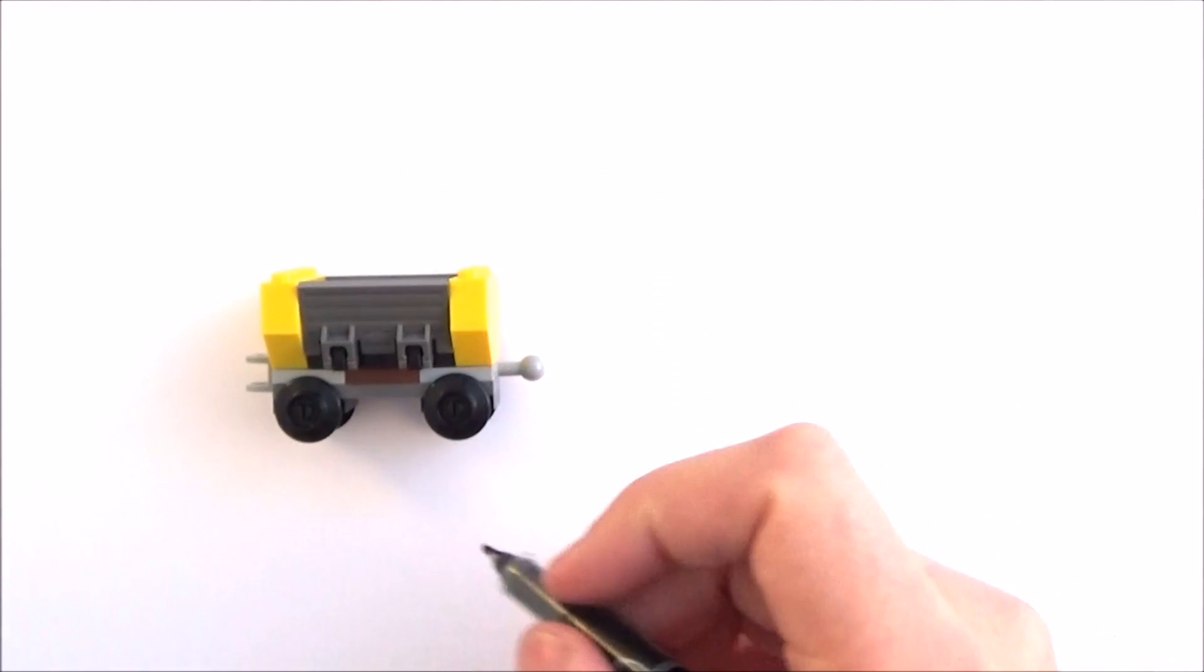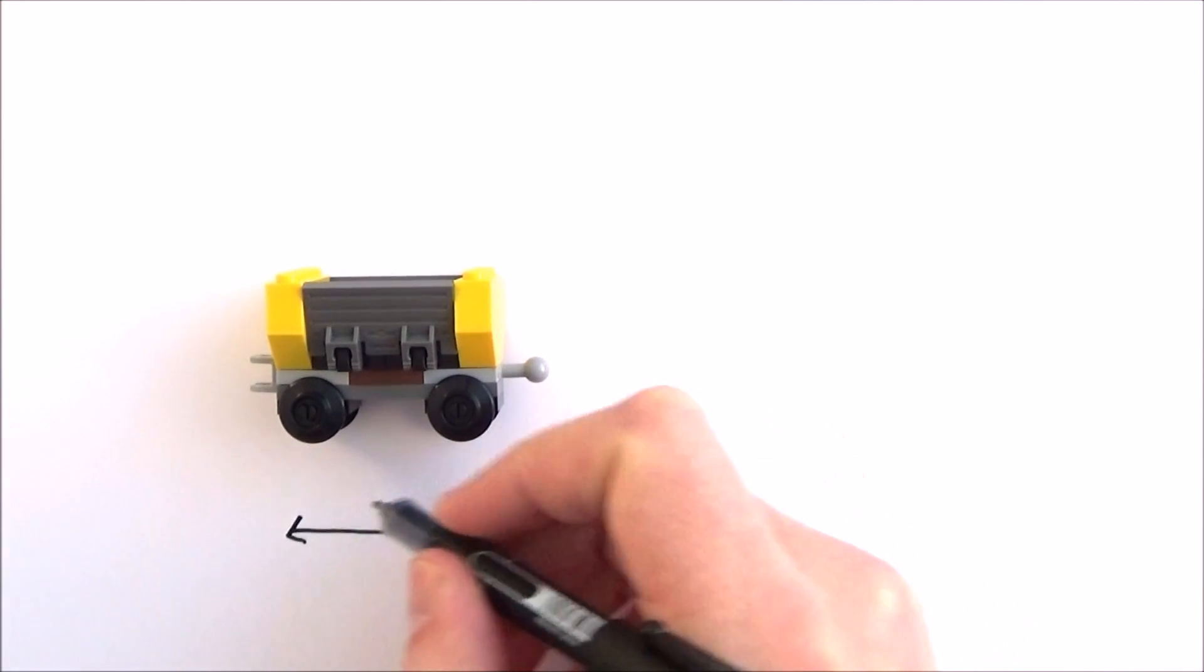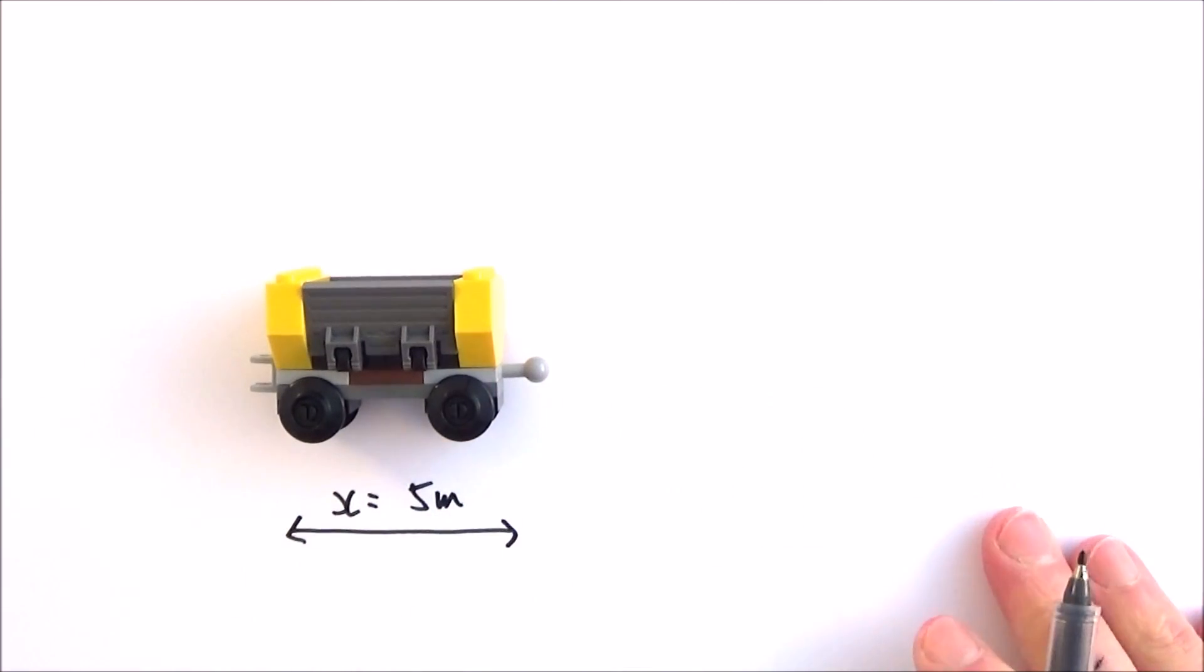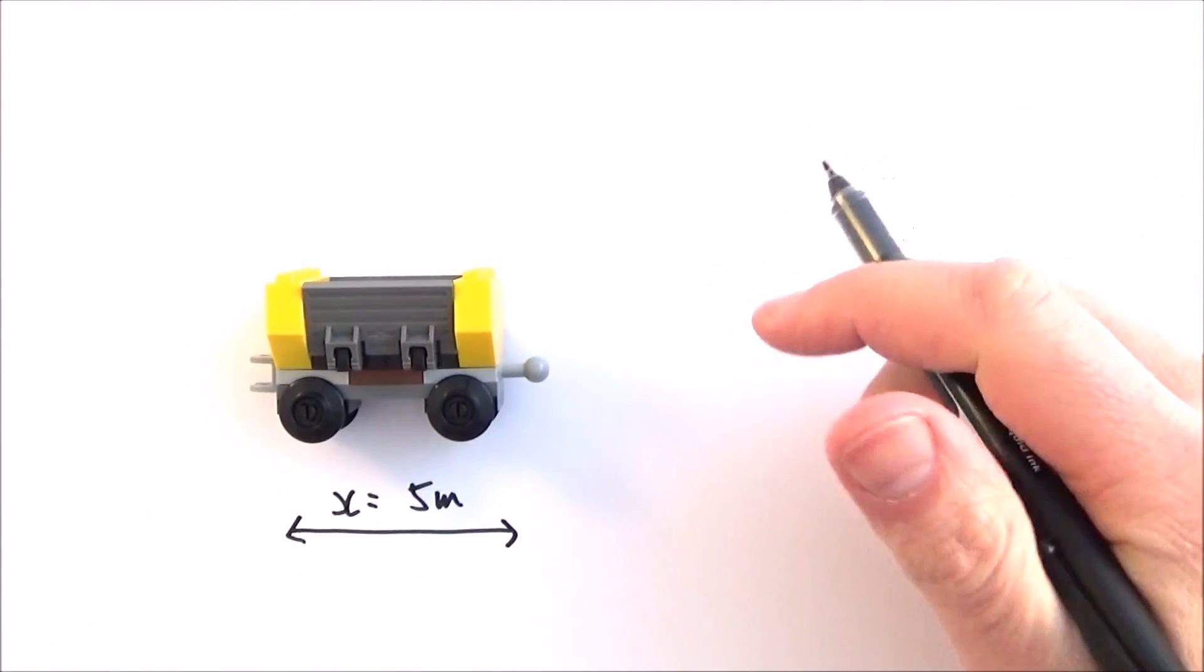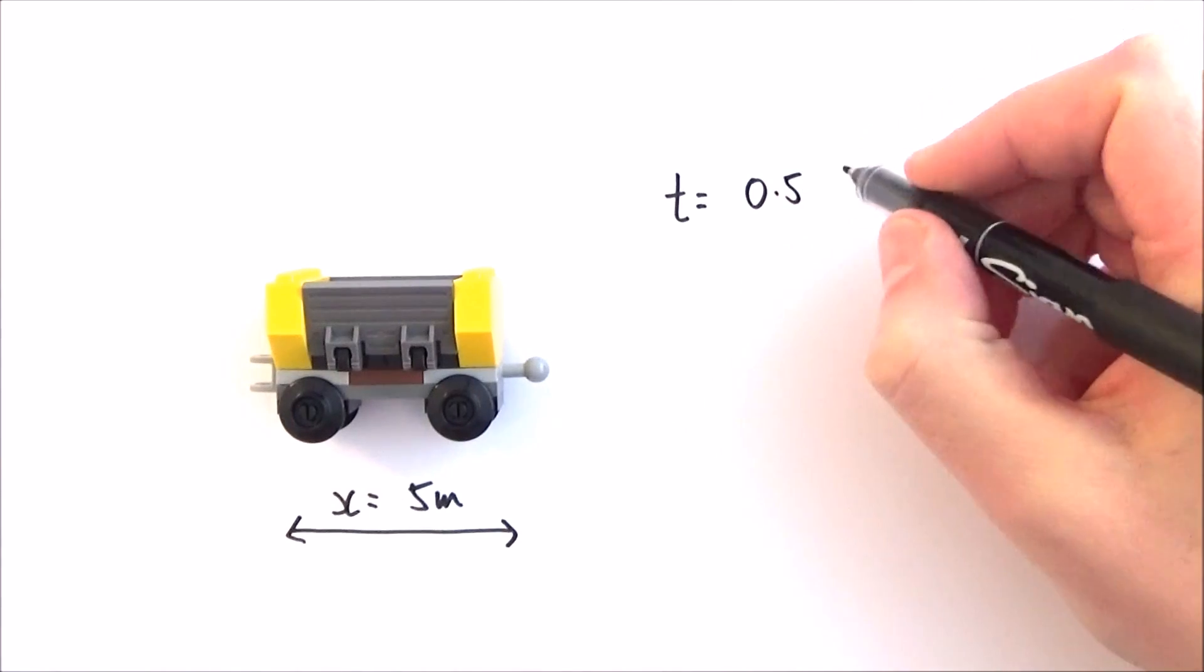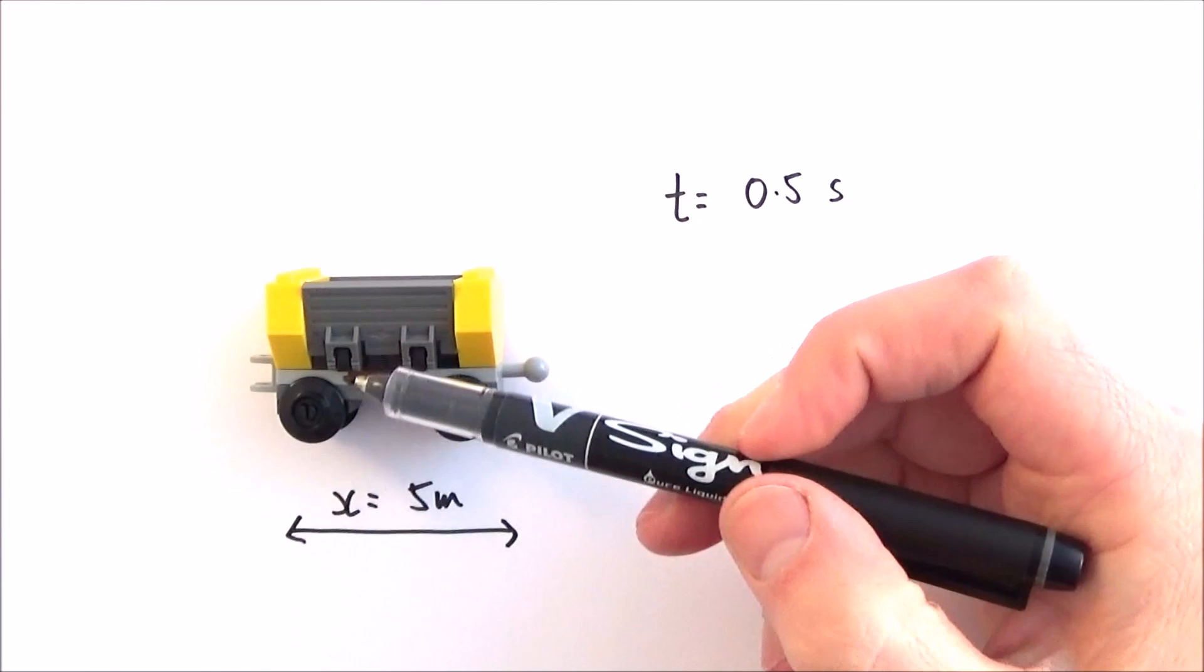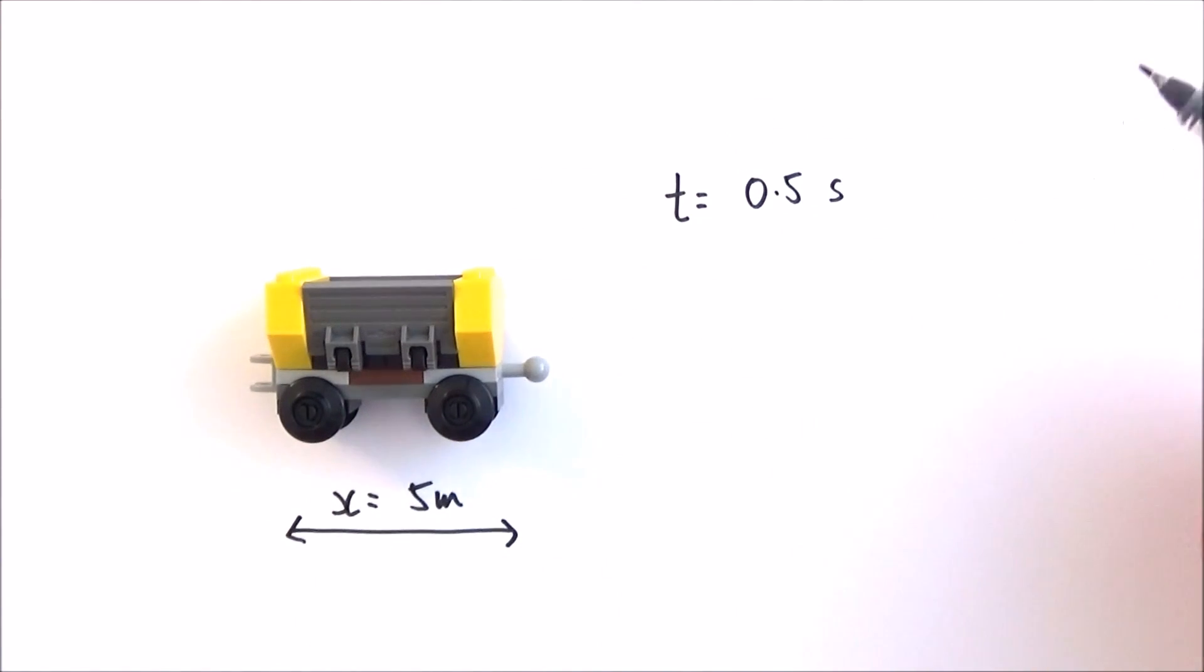We have the train carriages, and what we can think about is maybe the length of that carriage x, and this might be equal to maybe 5 meters. We can also think about the time it took for each carriage to go past, so maybe the time for one carriage to go past was 0.5 of a second. So we've got carriages which are 5 meters long and it goes past in 0.5 of a second.